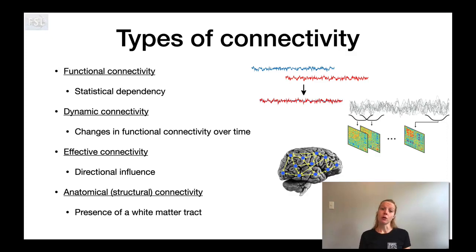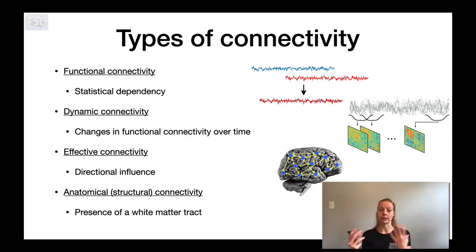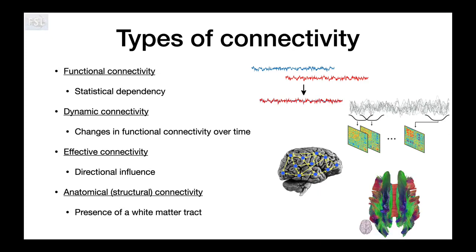Another form of connectivity is effective connectivity, which asks the question of directionality — is it the case that one region influences or drives the other region, or is the directionality the other way around? And then the last form I want to briefly mention is anatomical or structural connectivity: the presence of a white matter tract as measured, for example, with diffusion weighted imaging.